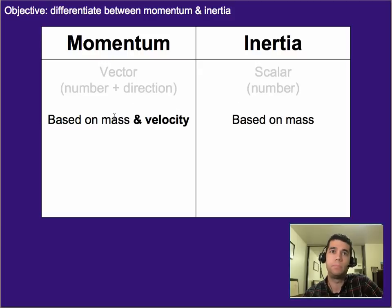Another difference: momentum is based on mass and velocity, whereas inertia is just based on mass. That means it only depends on mass, for the most part. There is one exception to that, but we won't talk about that in this class.